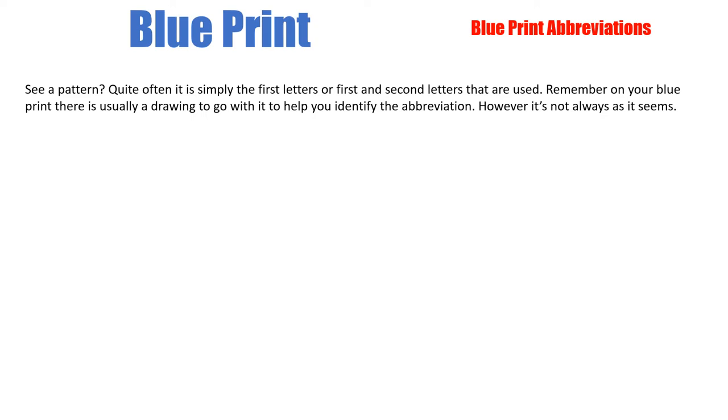Okay, so do you see a pattern? Quite often it's simply the first letters or the first and second letters that are used. Remember, on your blueprint there's usually a drawing to go with the abbreviation, so the two sometimes are together, which makes it easier to identify.